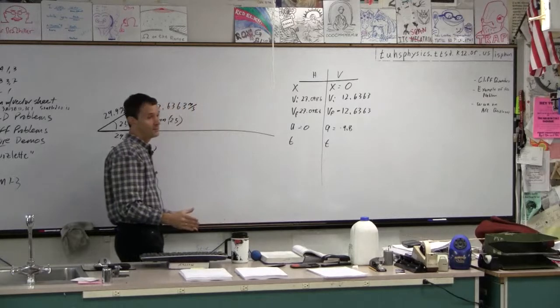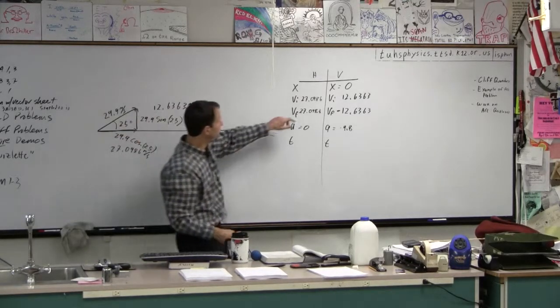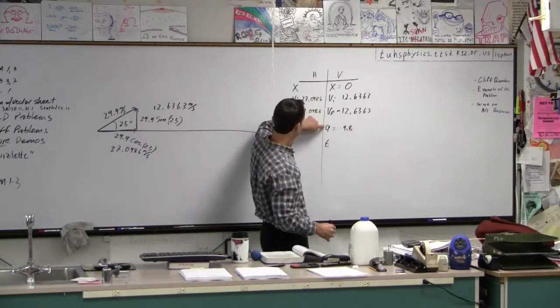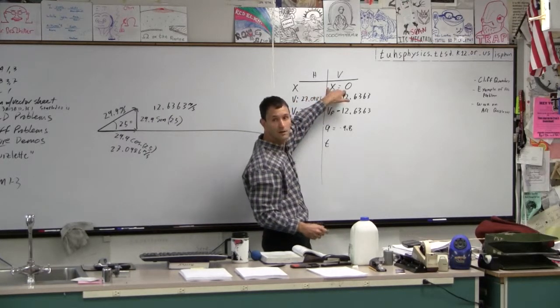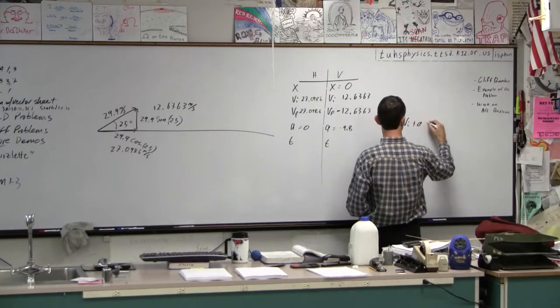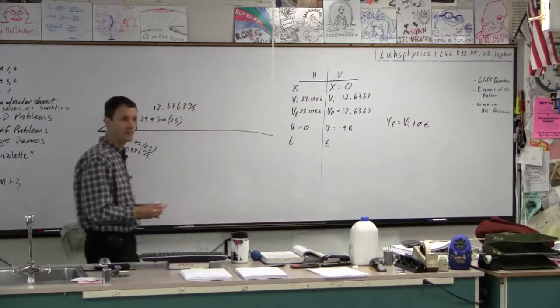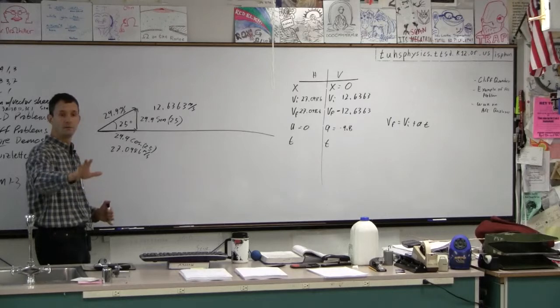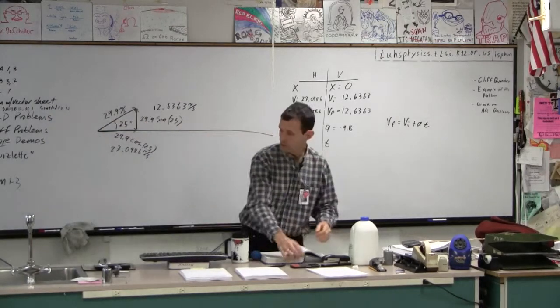Now, I think we can find time. What formula do we want to use to find time? I think you want to use one that does this, this, this. In other words, the one that doesn't have X in it. Which one's that? That's the one. So VF is VI plus AT. Use that one now. Take your calculators and calculate what the time is. And it's not zero. I promise you it's not zero.